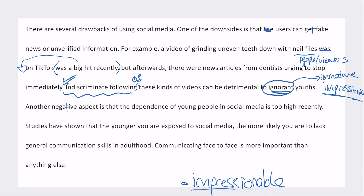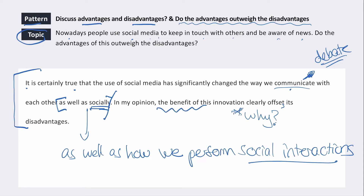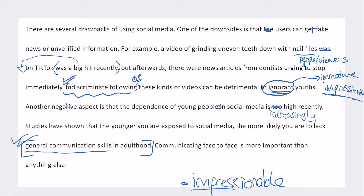Another negative aspect they mention: 'The dependence of young people on social media is increasingly high. Studies have shown that the younger you're exposed to social media, the more likely you are to lack general communication skills in adulthood.' That's a very natural and nice phrase. 'Communicating face to face is more important than anything else.' This paragraph is nicely argued with evidence and good task achievement. However, since they're saying benefits outweigh drawbacks, they need a counter-argument here.